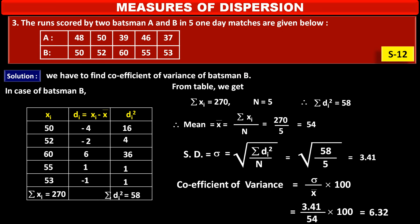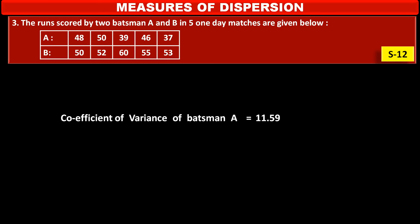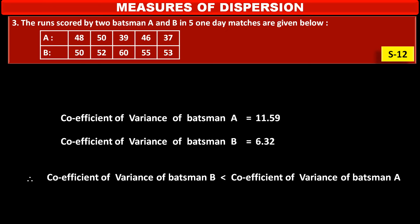We find the coefficient of variance of batsman B by the same method used for batsman A. We get the coefficient of variance of batsman B equal to 6.32. Thus, coefficient of variance of batsman A is 11.59 and coefficient of variance of batsman B is 6.32. Therefore, coefficient of variance of batsman B is less than that of batsman A.